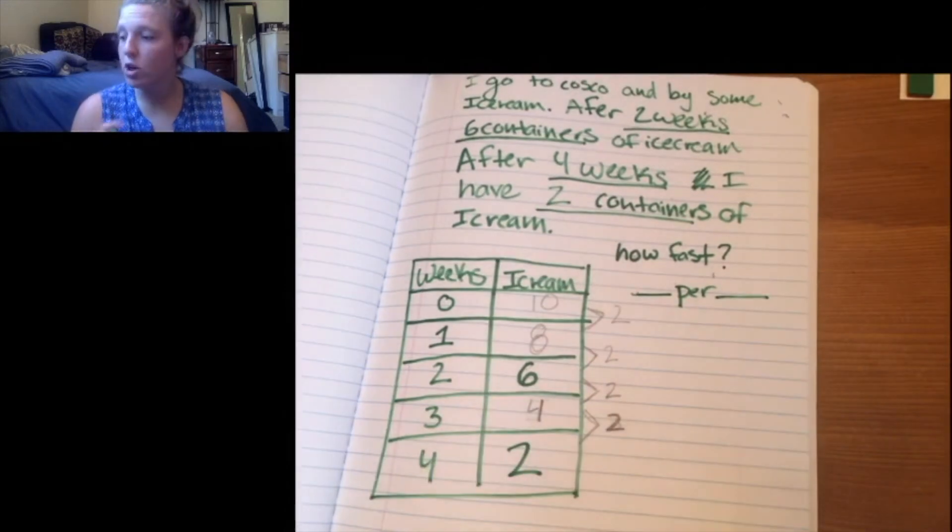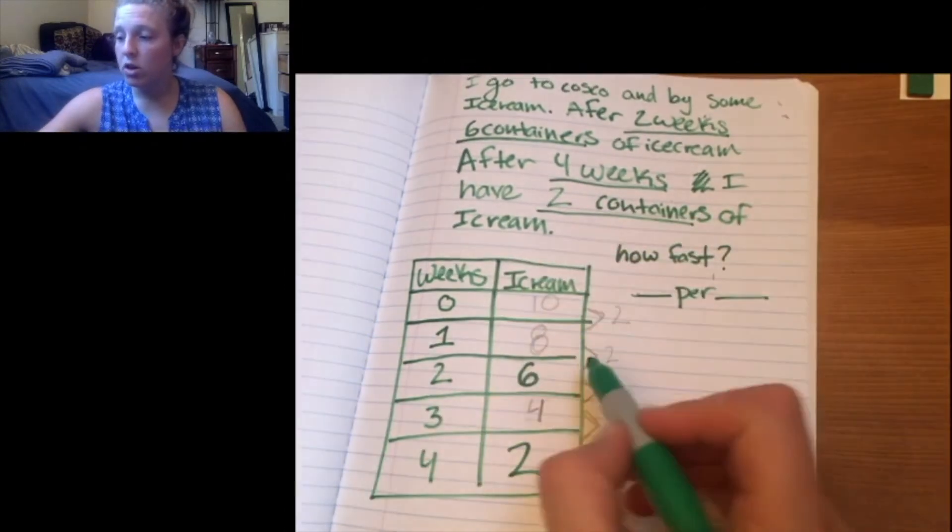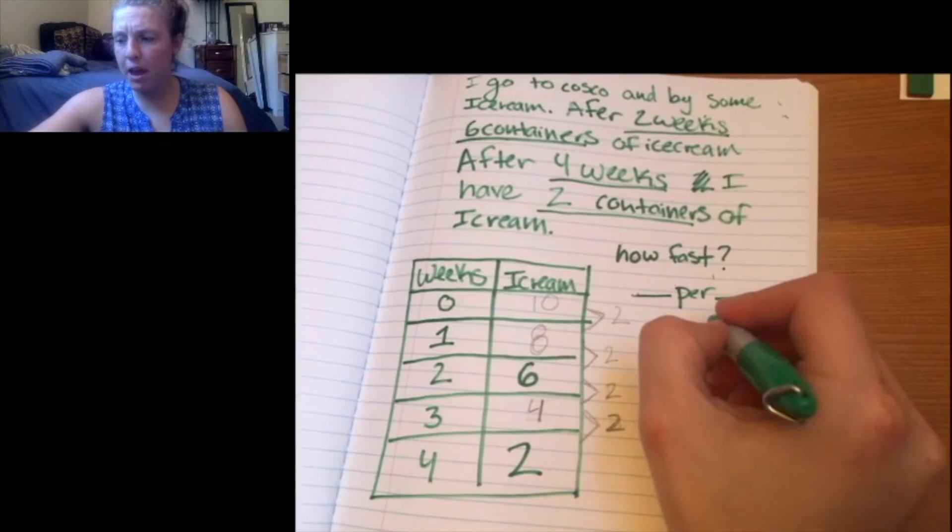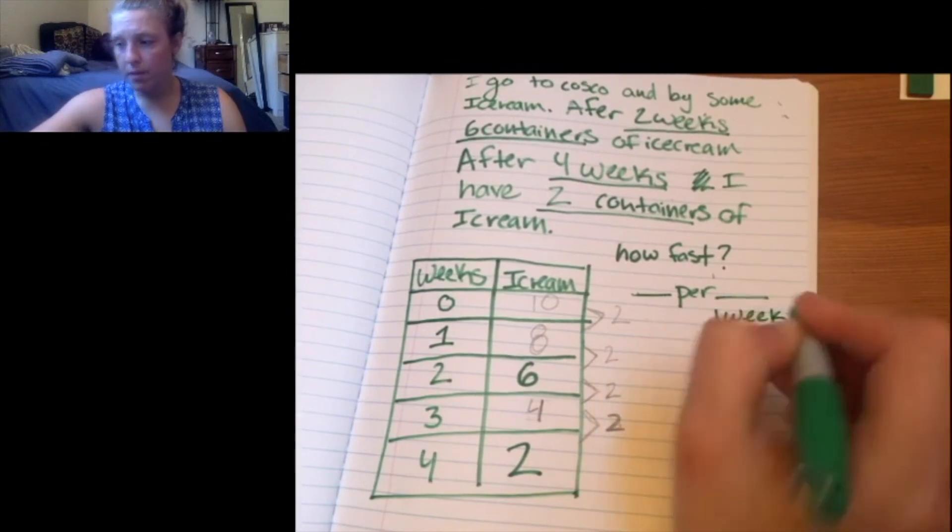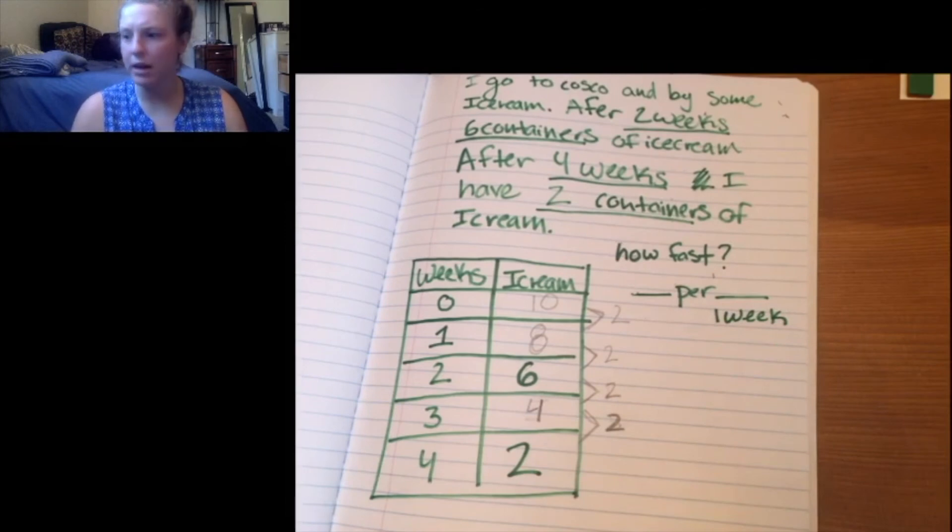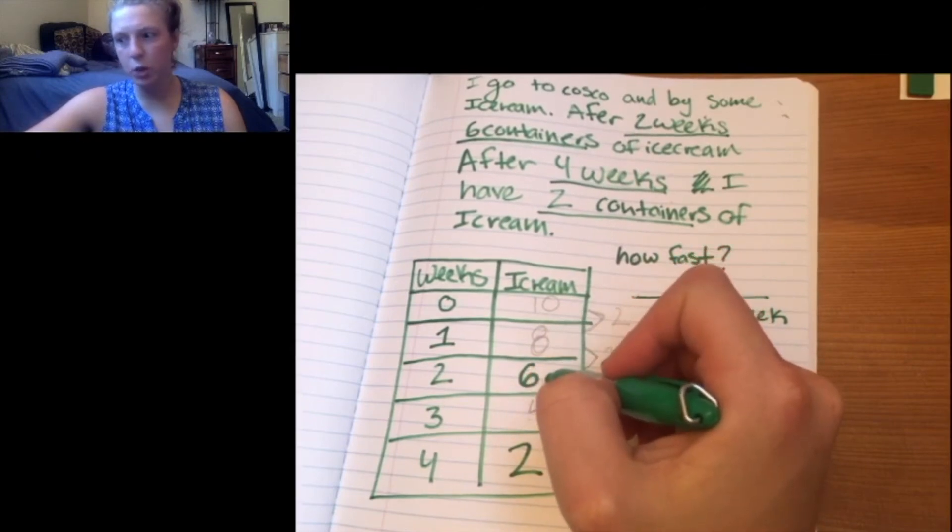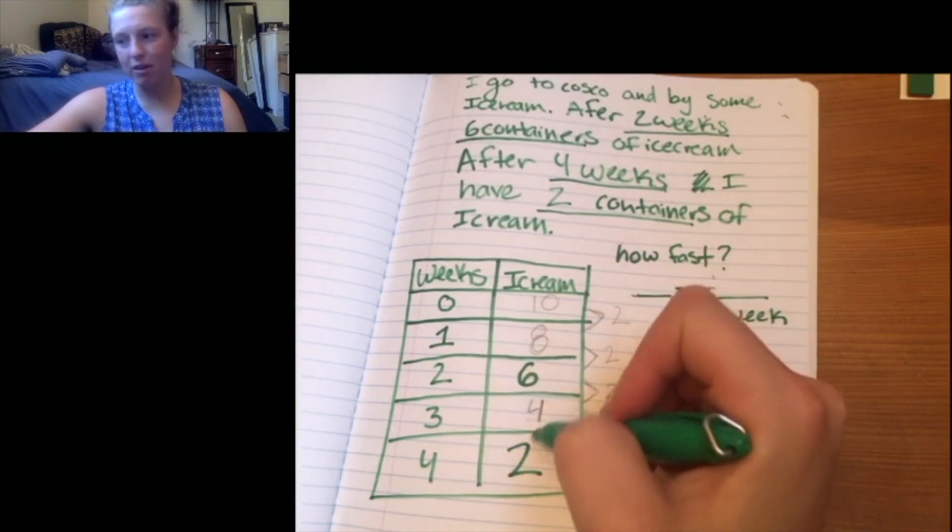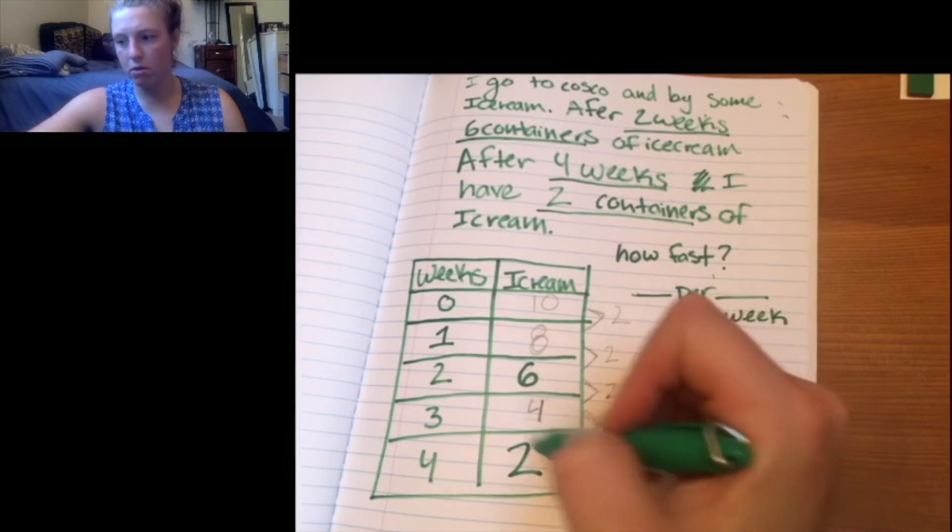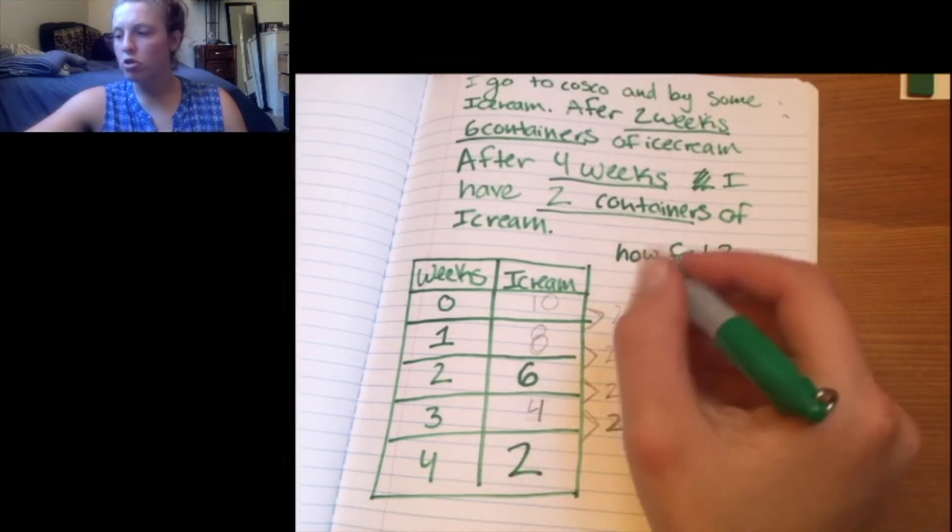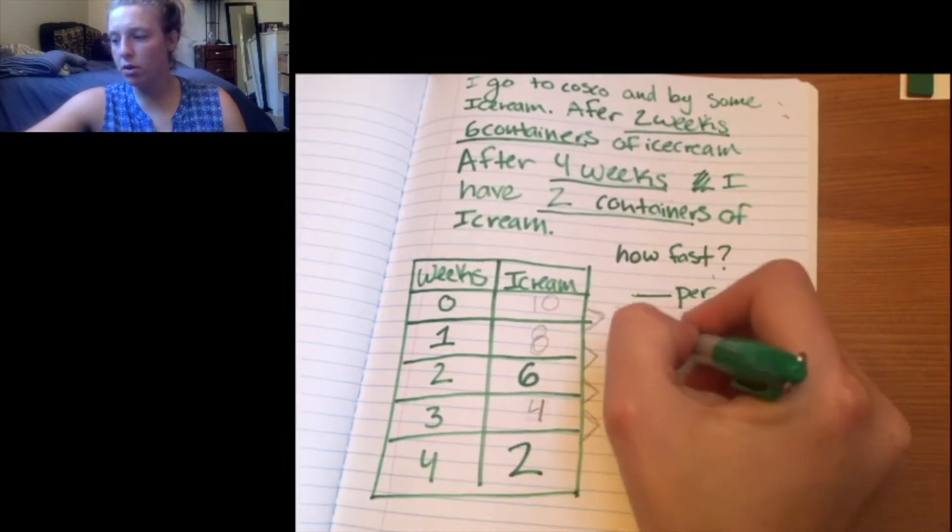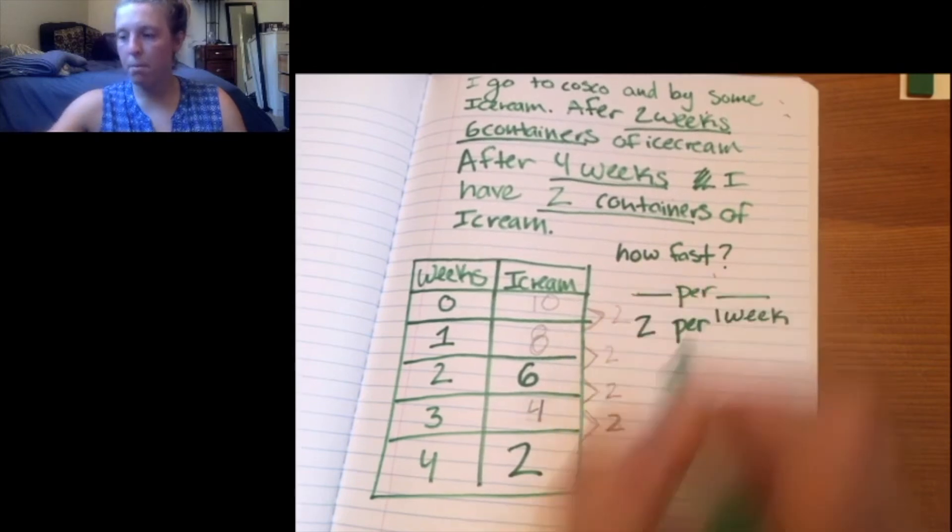Blank per blank. That's our rate language. So this one would be, I'm thinking per one week. And how much ice cream am I eating every week? This one goes from 10. In week one, I go down two. In week two, I go down to six. In week three, I go down to four. And in week four, I go down to two. So I'm eating two per week.